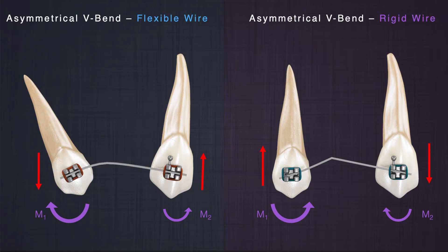So, flexible wire and rigid wire — when they adopt or are given a bend — act similarly in that the principles of moments and forces are the same and equilibrium must be established. However, with flexible wires, the direction of forces and moments is opposite to what we see with rigid wire. This is very important to keep in mind when starting to treat patients. Two couple systems, whether using rigid or flexible wire, have specific characteristics.